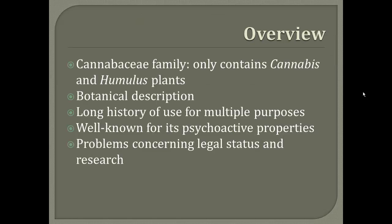Cannabis sativa is in the Cannabaceae family, which only contains cannabis and humulus plants. An example of a humulus plant is hops, which is the main ingredient found in beer. I'll be going over a botanical description of marijuana, a long history of its medicinal and non-medicinal uses, some of the chemistry of the plant which attributes to its psychoactive properties, and some problems that concern research of Cannabis sativa due to its Schedule I drug legal status in the USA.